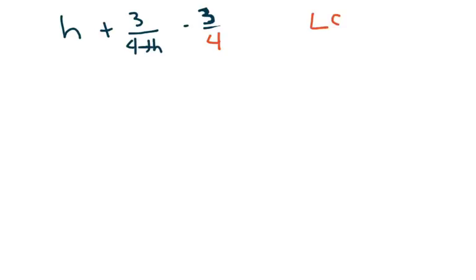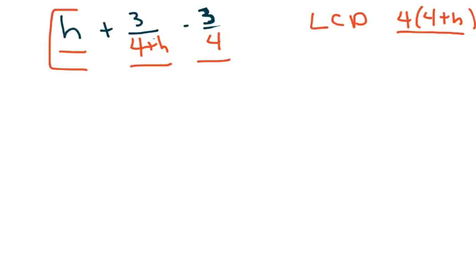Now, my LCD, least common denominator, is going to be 4 times 4 plus h. That's going to be 4 plus h. So we're going to multiply each piece, these three terms, by 4 times 4 plus h. So I'm just taking this. I'm going to distribute the 4 times 4 plus h. This is over 1. So this is just going to be 4h, this first piece. 4h times 4 plus h.